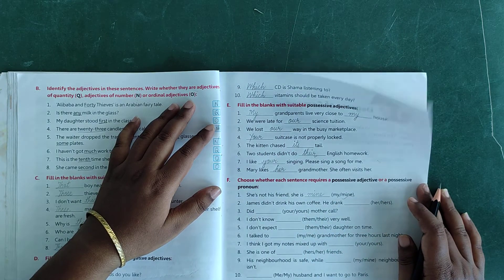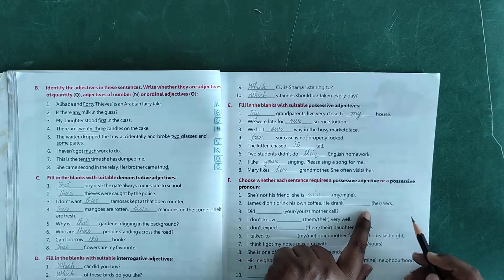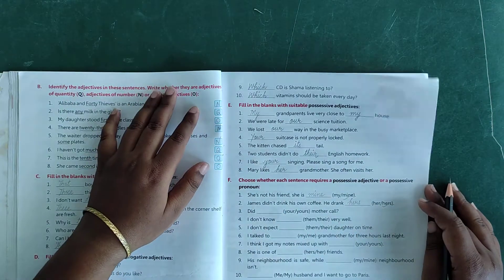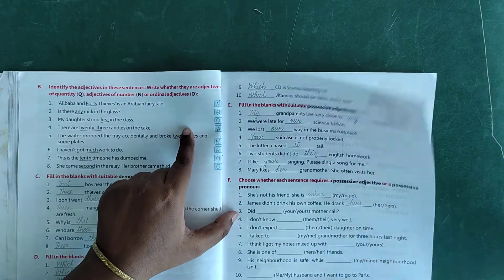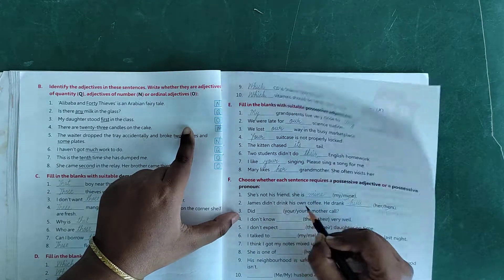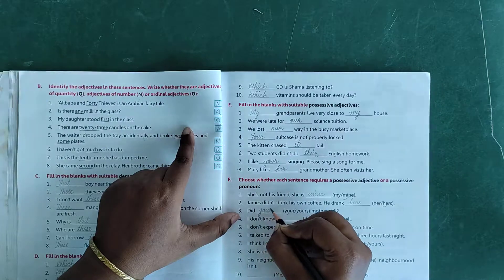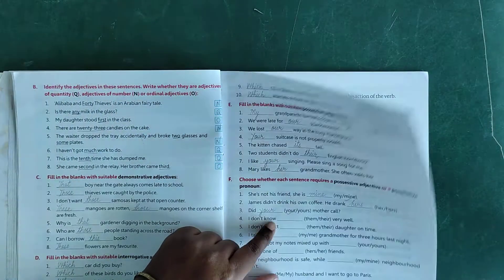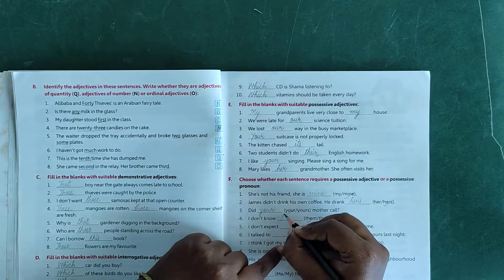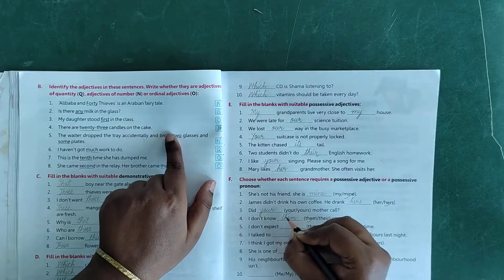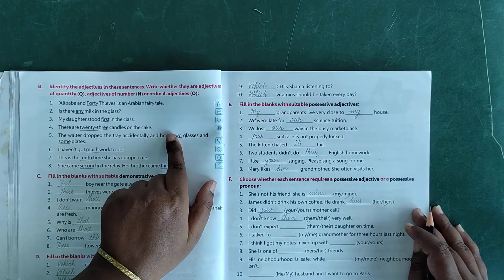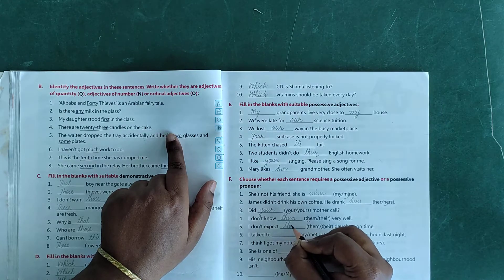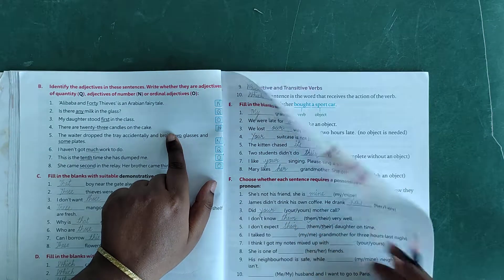Number 2: James didn't drink his own coffee, he drank dash - hers, H-E-R-S. Number 3: did dash mother call - your, Y-O-U-R. Number 4: I don't know dash very well - them. Number 5: I don't expect dash daughter on time - their daughter, T-H-E-I-R.